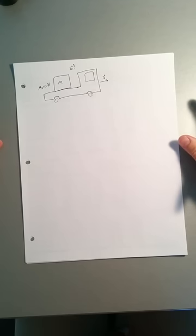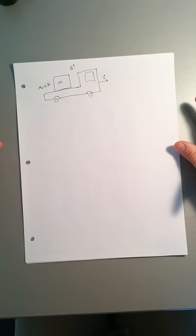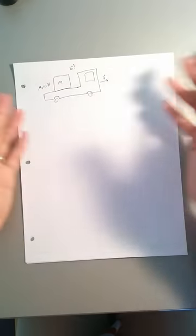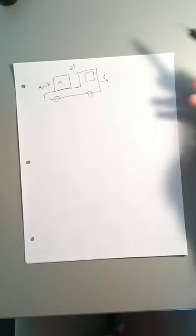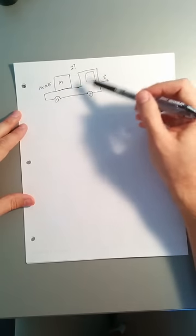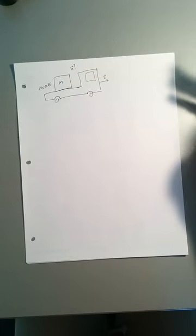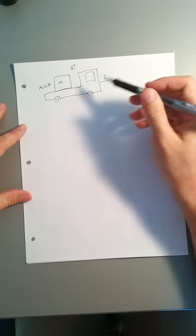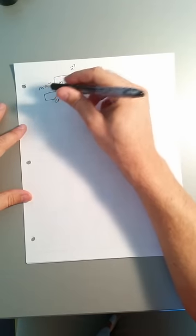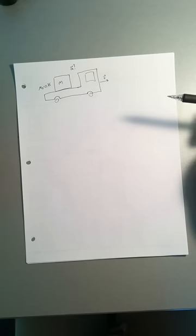Before we get too much into this, we need to think about what is actually happening. Everything's going along with a speed V. We know from our first law that even if the truck starts to stop, this box wants to keep going. The question is, what keeps it from going? Of course, it's the static friction acting between the box and the flatbed of the truck that keeps it from going.